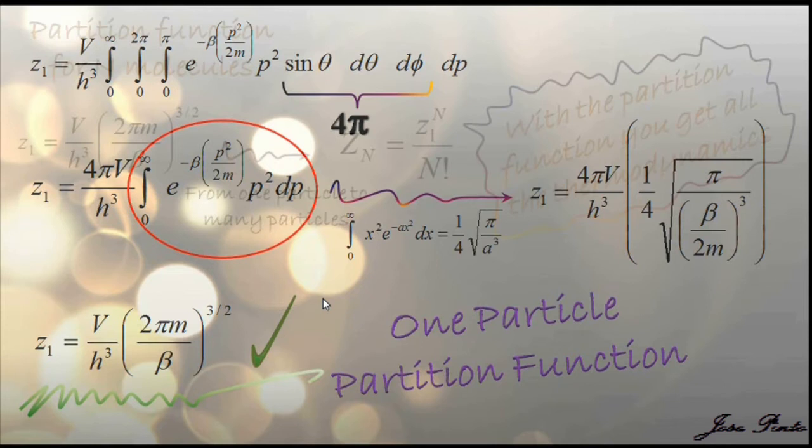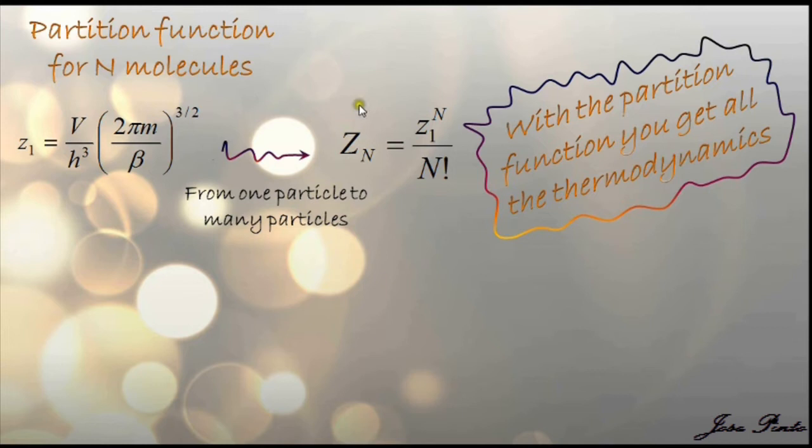So let me explain the plan one more time. You get the partition function from one particle. Then you go from one particle to many particles. This will give you the partition function of the system. Once you have it, then all thermodynamics can be calculated from this. So how do we do that?